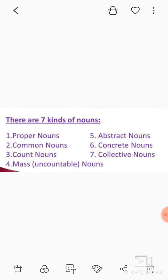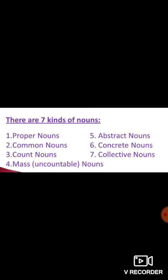There are different kinds of nouns. We will study seven kinds of nouns: number one, proper nouns; number two, common nouns; number three, count nouns; number four, mass or uncountable nouns; number five, abstract nouns; number six, concrete nouns; number seven, collective nouns. Let me add one more — number eight, material nouns.